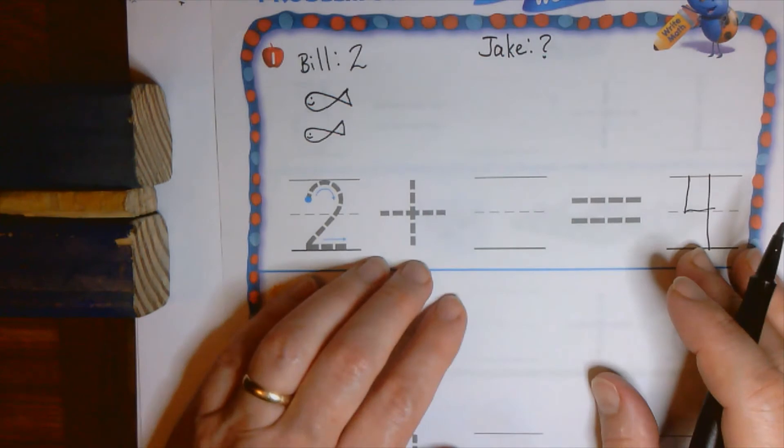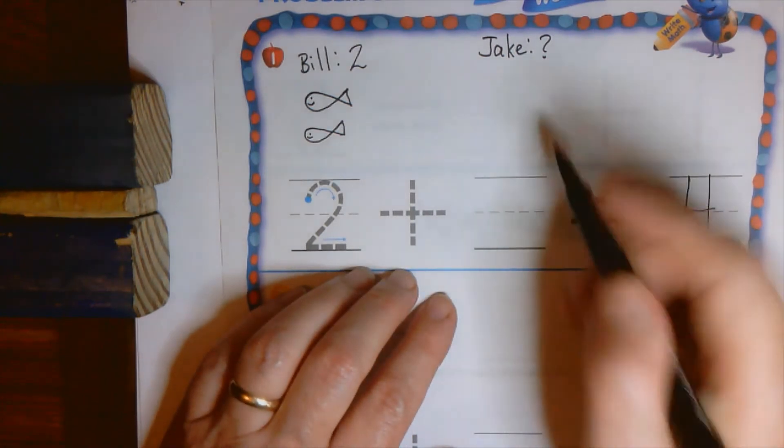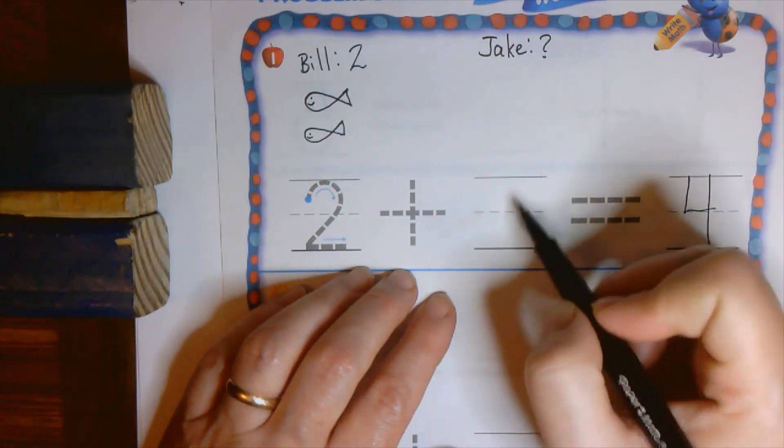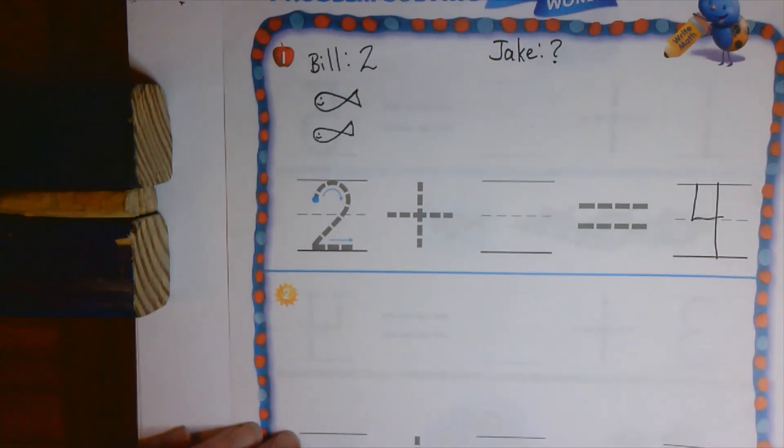All together, they catch four fish. So go ahead and put the four there. Now you guys did this kind of thing yesterday with linking cubes a little bit. Draw in the extra fish to tell us how many need to be here to get to four all together.